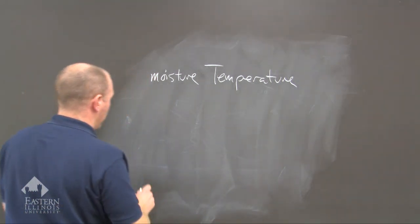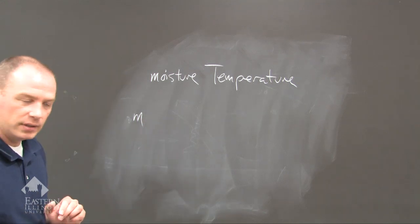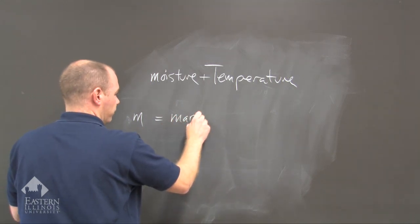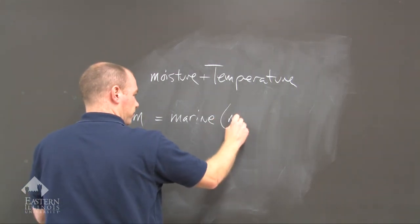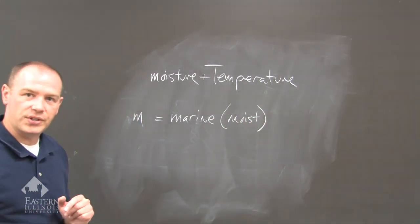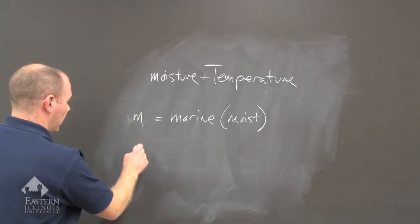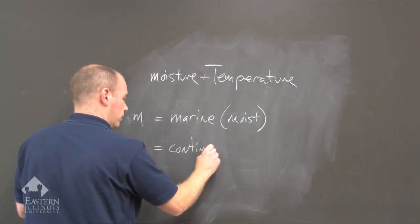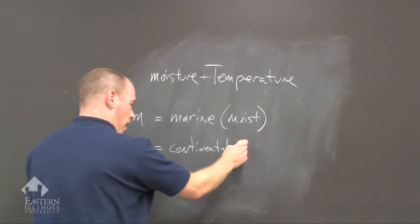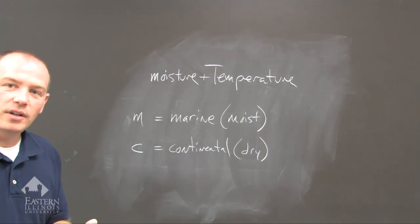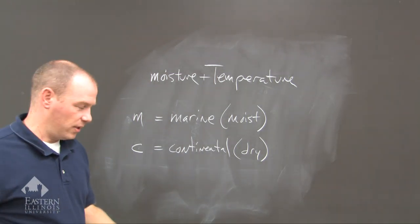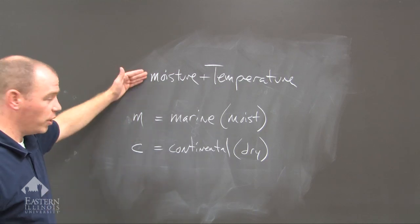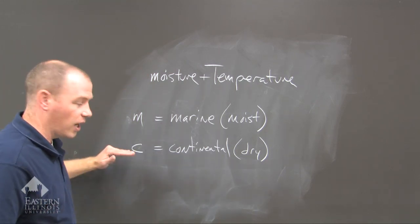Let's talk about these different abbreviations. A lowercase 'm' equals marine environment, which is moist — so this is a moist air mass. On the opposite side, a lowercase 'c' is the abbreviation for continental, which is dry. The air mass originates over land. Those are the only two qualifiers for moisture: you get a marine air mass or a continental air mass.